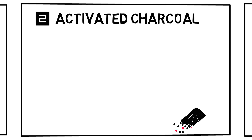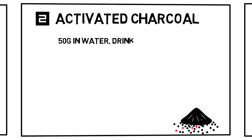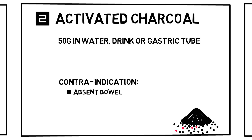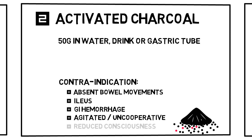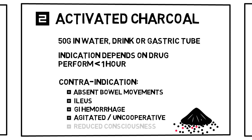Activated charcoal is used as a binding agent to prevent absorption. It is performed by mixing the charcoal with water and letting the patient either drink this, or by administering it over a gastric tube after gastric lavage. Typical dose is 50 grams. Contraindications are absent bowel movements or ileus, gastrointestinal hemorrhage, and if your patient is non-cooperative. Beware when administering activated charcoal in patients with reduced levels of consciousness, as they could aspirate. Activated charcoal is only effective in certain drugs and when performed early — usually within the hour. It is not effective for metals like iron or alcohol.